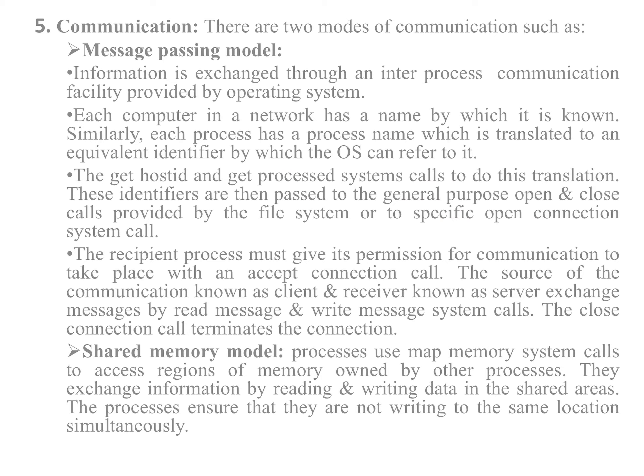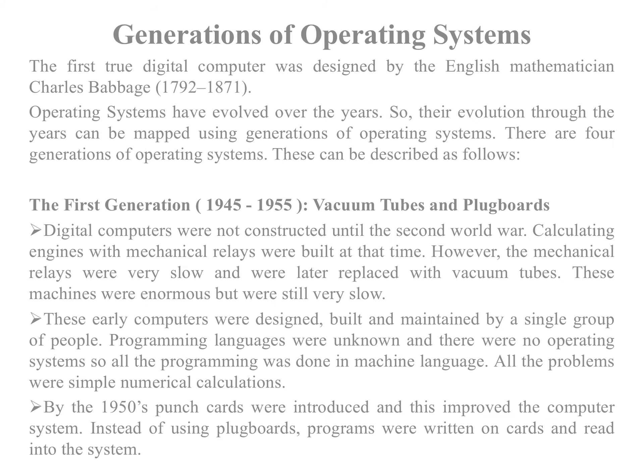The operating system acts as an interface between the user and the hardware, while system calls act as the interface between the process and the operating system. Next topic: Generation of Operating Systems. The first digital computer was designed by English mathematician Charles Babbage in 1792 to 1871. The operating system has evolved over the years, and this evolution can be mapped using four generations of operating systems.